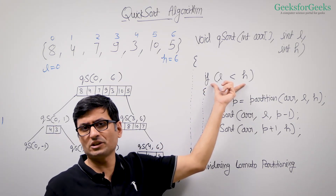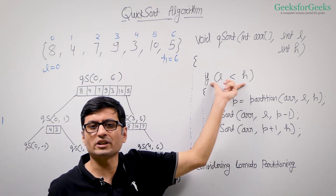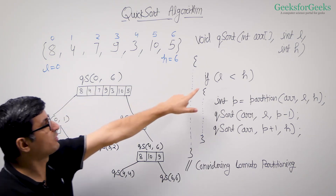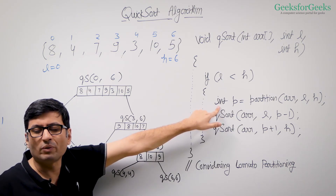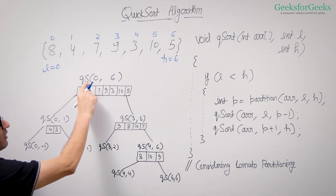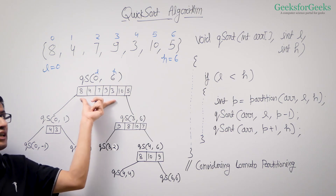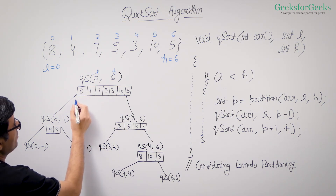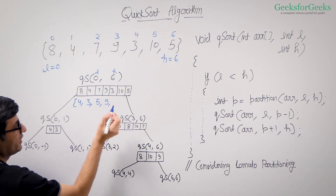The condition in quicksort says that if there is one element, do not sort it, or if H is less than L, do not make any recursive calls. Since L is 0 and H is 6, we come inside and call the Lomuto partition function. Lomuto partition puts 5 at its correct position, resulting in the array: 4, 3, 5, 9, 8, 10, 7. Partition returns index 2, so P is 2.